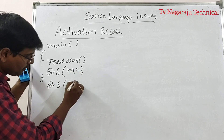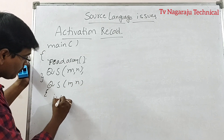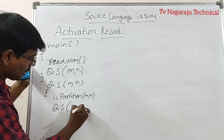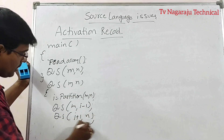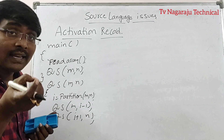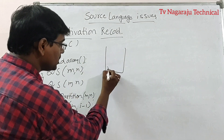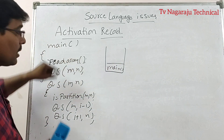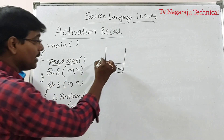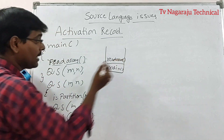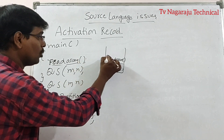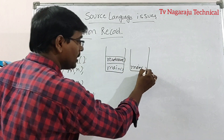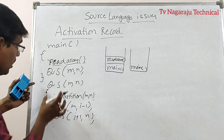Coming to the quicksort algorithm: quicksort of m, n first performs a partition operation — partition of m, n — then calls quicksort of m, i-1 and quicksort of i+1, n. The activation record of main is created and pushed to the stack. Next, read array is pushed into the stack. When read array is completed, the activation record is popped, and read array is popped out from the stack.